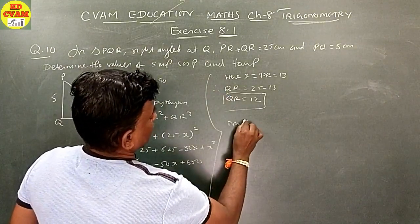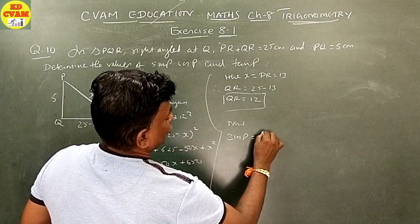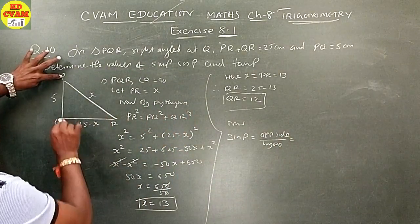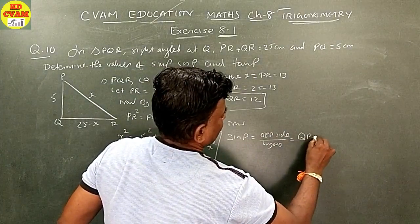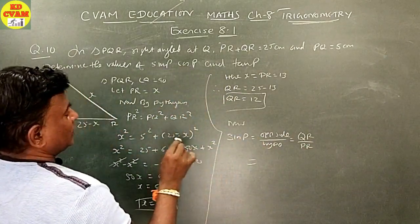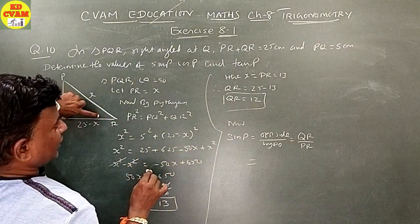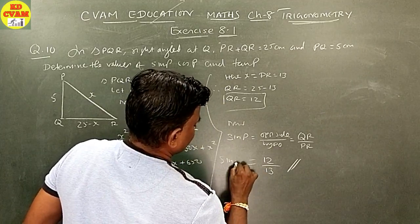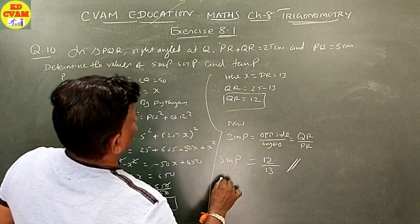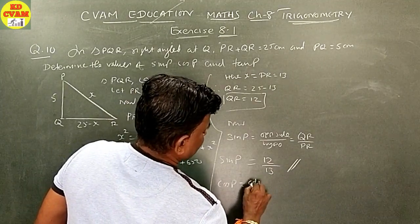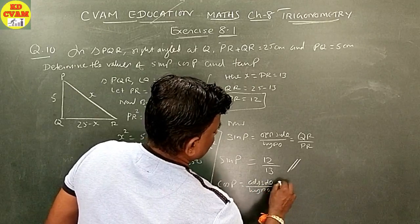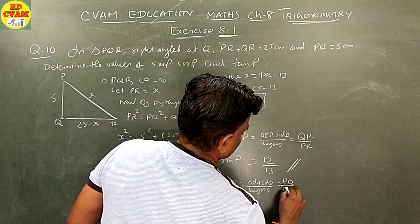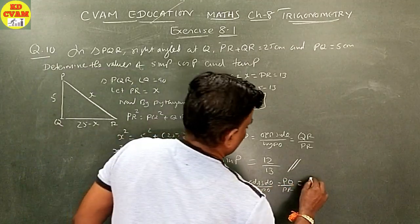Sin P is equal to opposite side upon hypotenuse, which equals QR upon PR. That is, 12 upon 13. Cos P is equal to adjacent side upon hypotenuse, which equals PQ upon PR. That is, 5 upon 13.